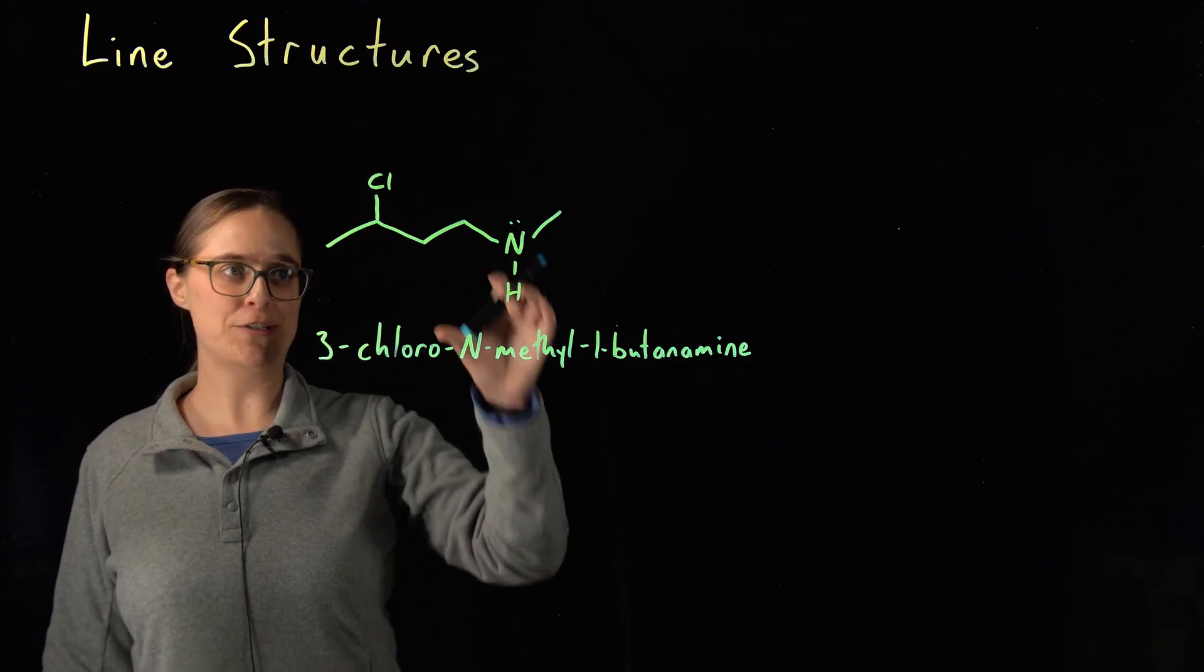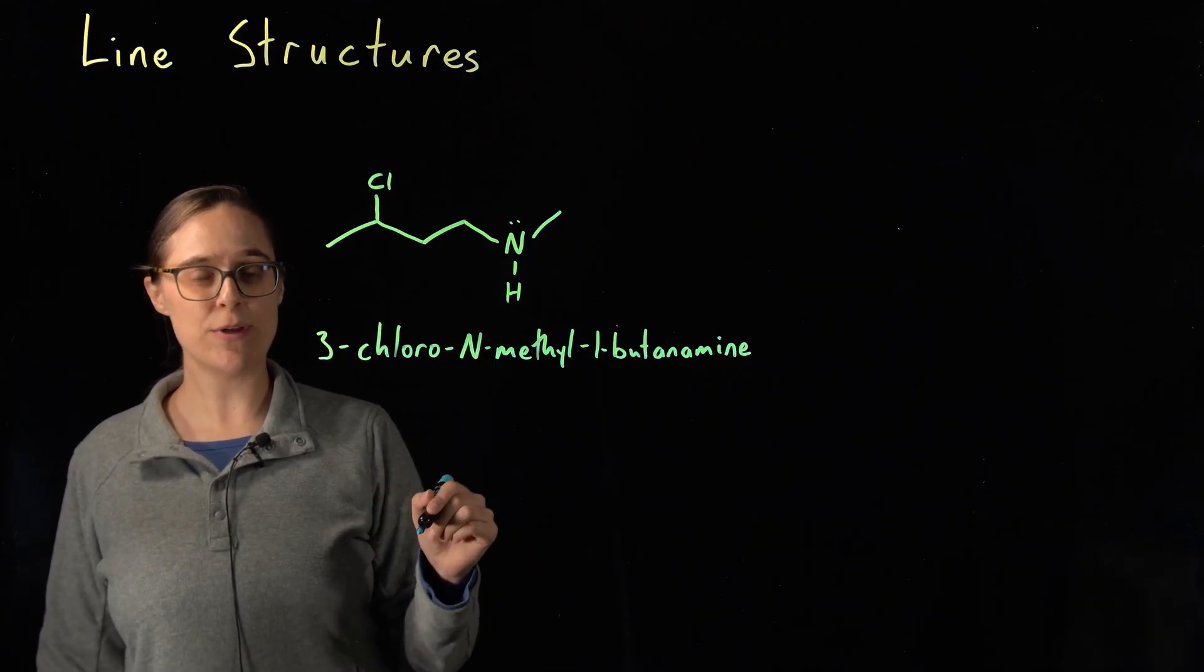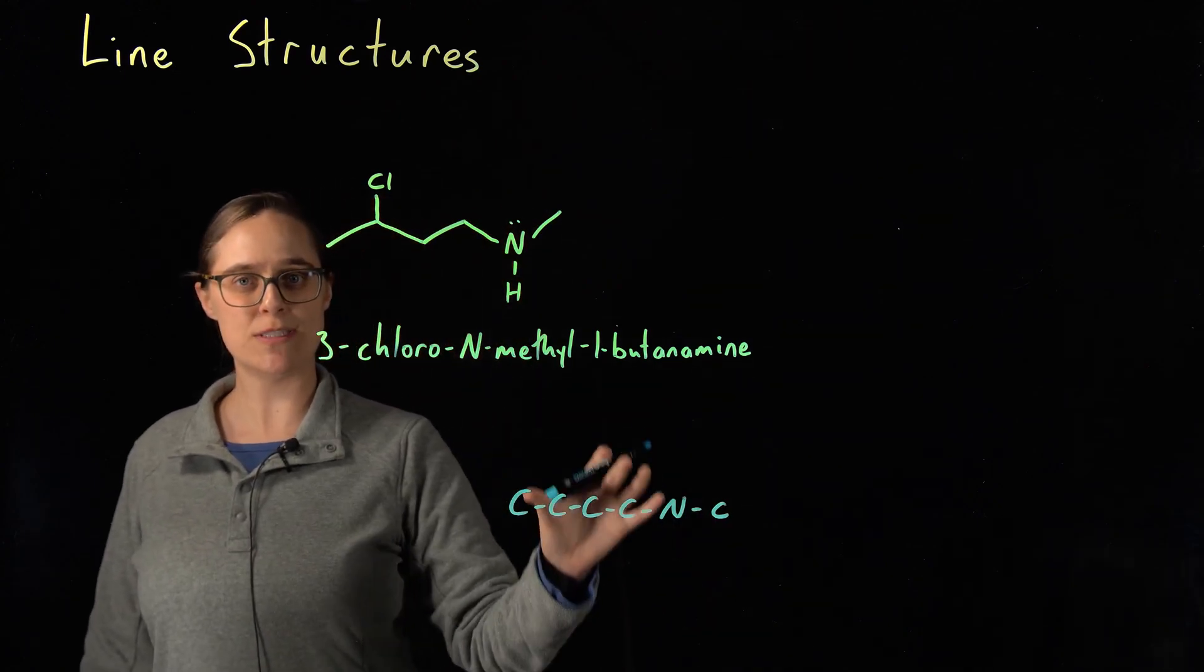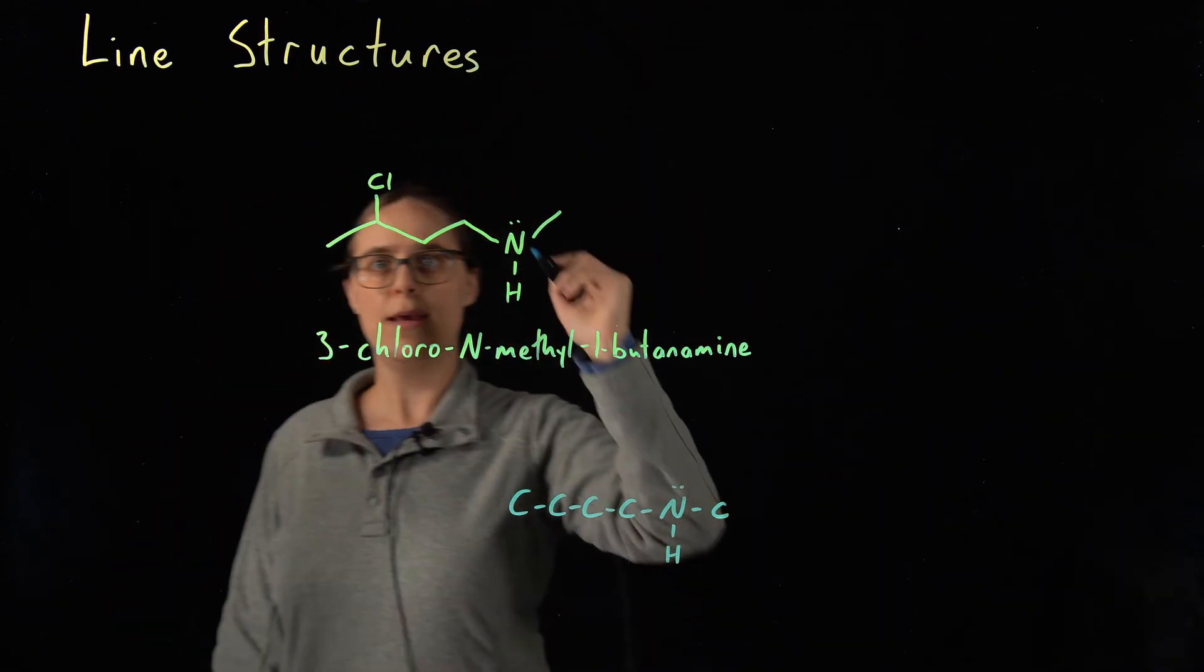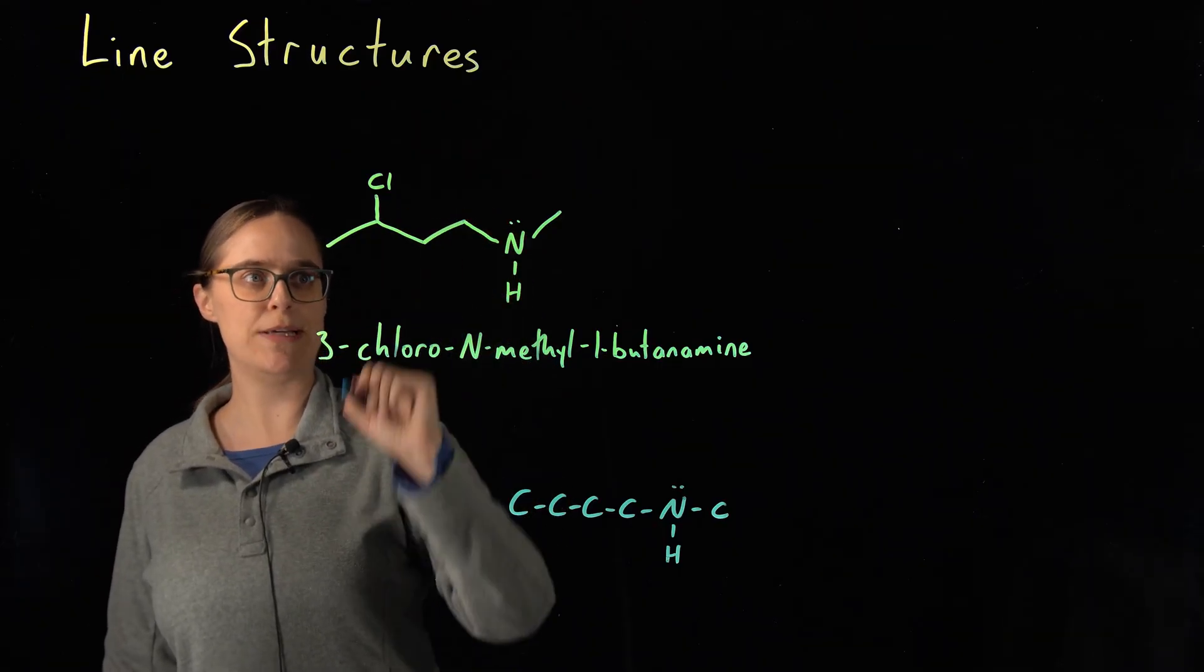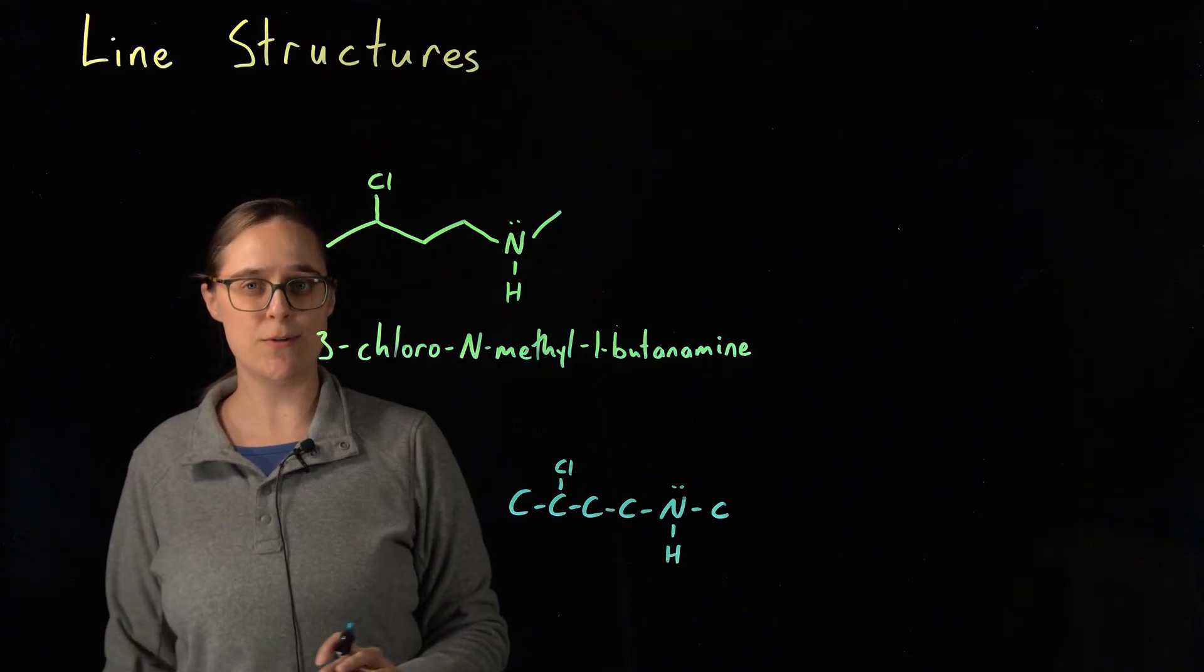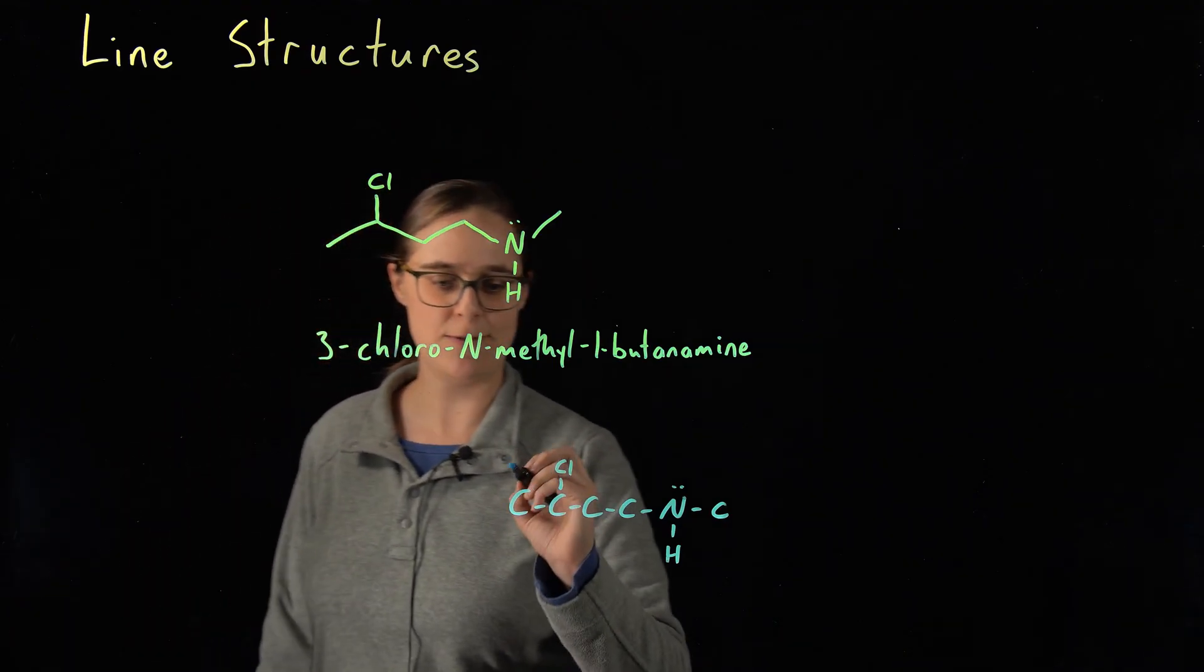Now let's do some practice problems in the reverse direction. So I'm starting with a line structure. I want to draw a Lewis structure. The first thing you should do is figure out what your backbone is. In other words, carbon, carbon, carbon, carbon, nitrogen, carbon. Now let's figure out what else is bonded to each of these atoms. So the nitrogen has a lone pair of electrons and a hydrogen. And we have a carbon with a chlorine on it. And you need to assume that this molecule has as many hydrogens as it needs, so that each and every carbon has a total of four bonds.